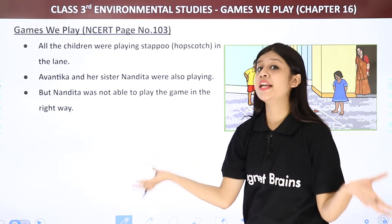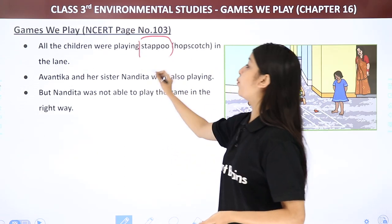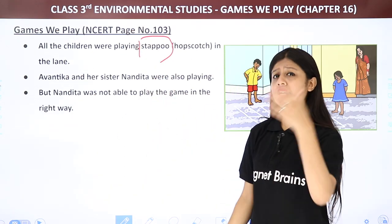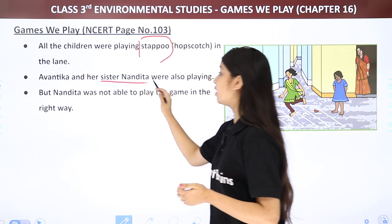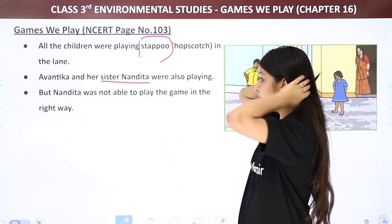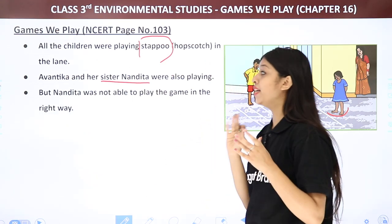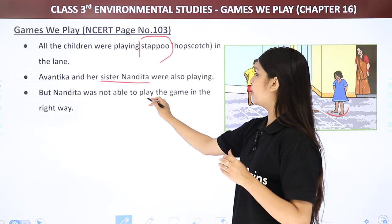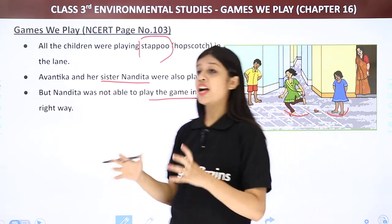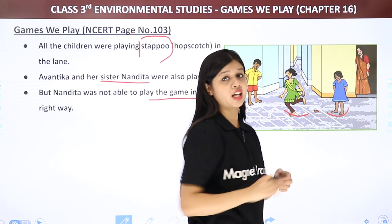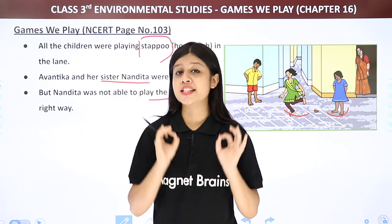All the children were playing Stapu in the lane of the colony. Avantika and her sister Nandita were also playing. But Nandita was not able to play the game the right way because she didn't know exactly how to play.